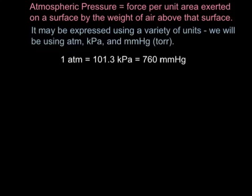There are several different units that can be used to describe pressure, and we're going to be using three of those: atmospheres, kilopascals, and millimeters of mercury, also known as Torr. These are three equivalences: one atmosphere of pressure is equal to 101.3 kilopascals, which is equivalent to 760 millimeters of mercury. So at sea level on planet Earth, our standard pressure used in calculations can be expressed as any of these — they're all equivalent to each other, just using different units.